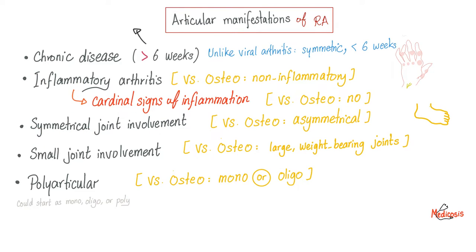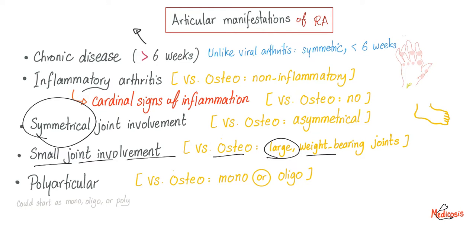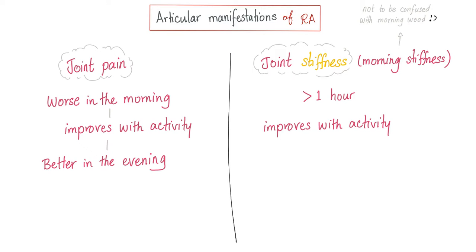Symmetrical joint involvement, unlike osteo. Why symmetrical? Because antibodies do not discriminate. Small joint involvement versus osteo — osteo is large weight-bearing joints. Polyarticular versus osteo, which is mono or oligo. By the way, rheumatoid can start as mono, oligo, or poly, but in advanced cases it's going to be poly. What does poly mean? Five joints or more.